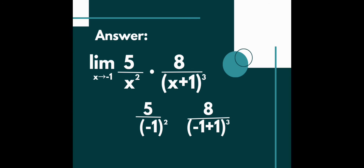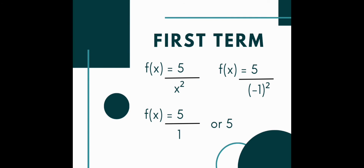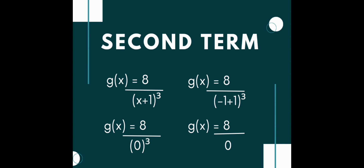Now let's tackle the first term. The limit of 5 over x squared as x approaches negative 1 is simply 5 over negative 1 squared, which is 5 over 1, or just 5. For the second term, as x approaches negative 1, the denominator x plus 1 cubed becomes 0. Since the numerator 8 does not depend on x and is not 0, the limit of 8 over x plus 1 cubed is undefined due to division by 0.